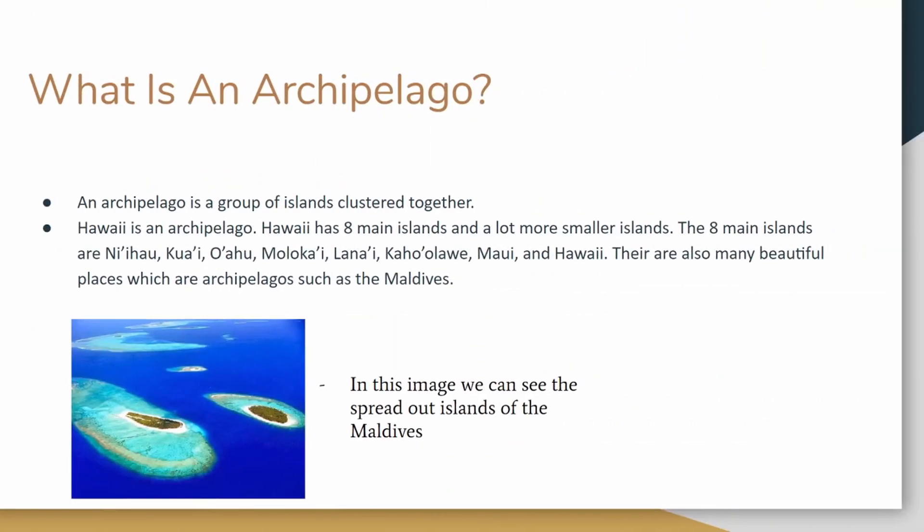What is an archipelago? An archipelago is a group of islands clustered together. Hawaii is an archipelago.